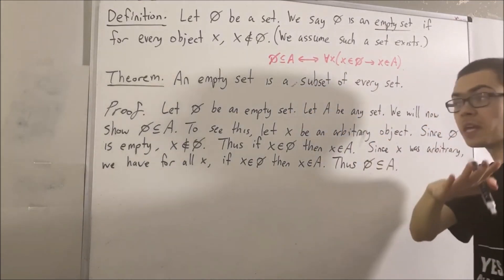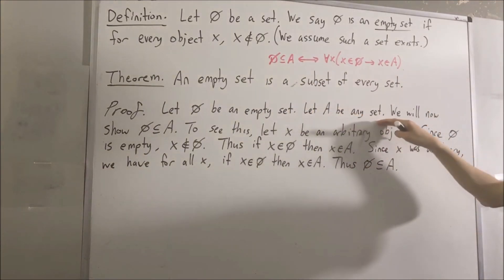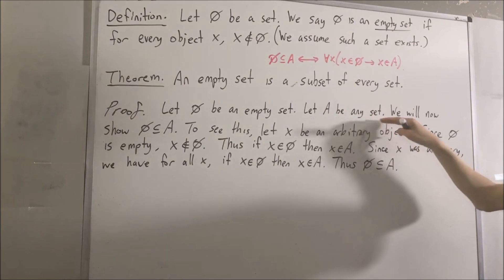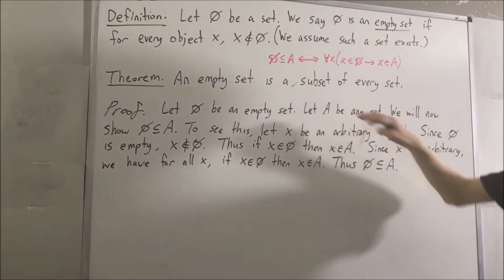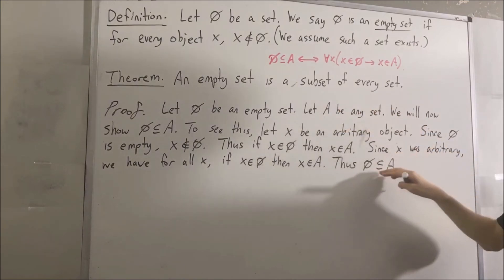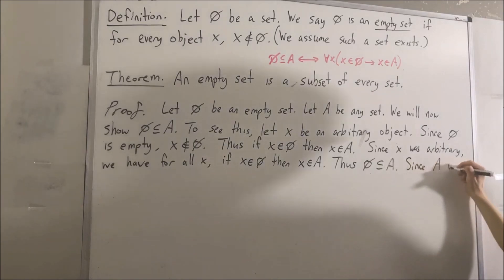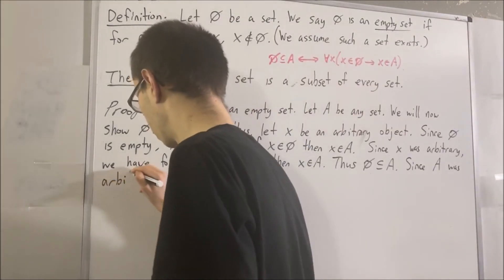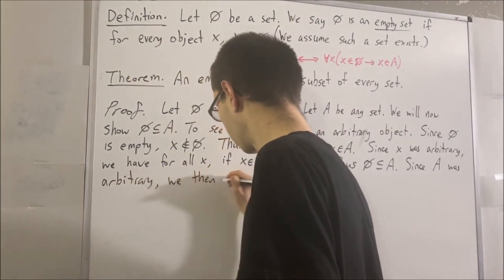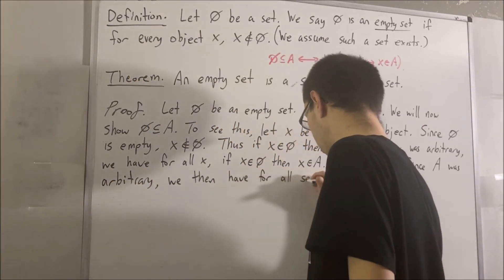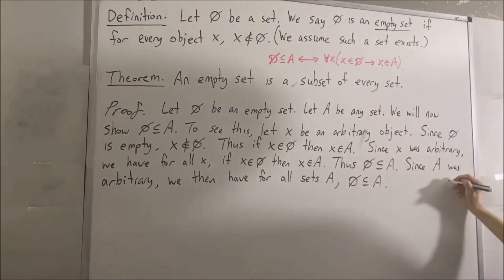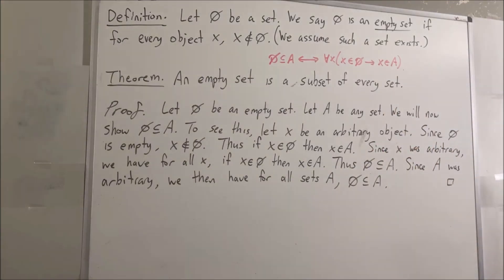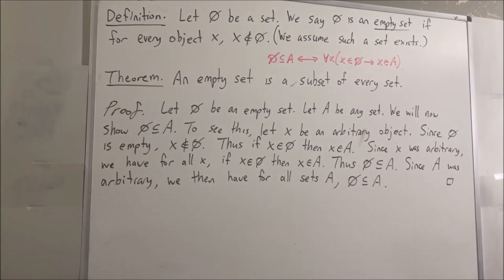So we have proven this statement, which means we have proven that our empty set is a subset of A. And since A was an arbitrary set, this means for all sets A, our empty set is a subset of A. And this completes our proof. That's pretty much it for this video.